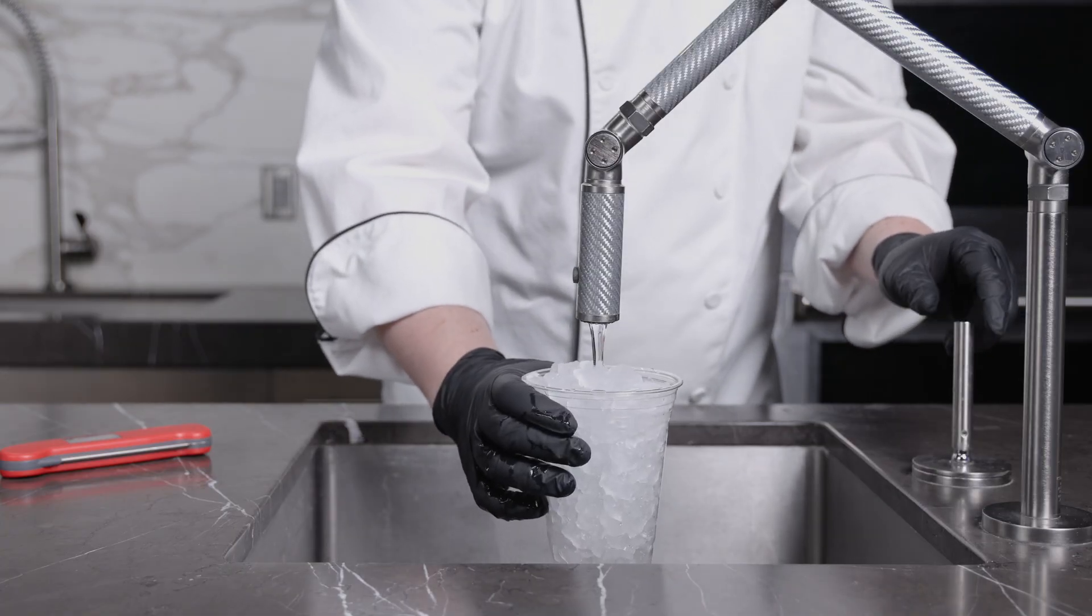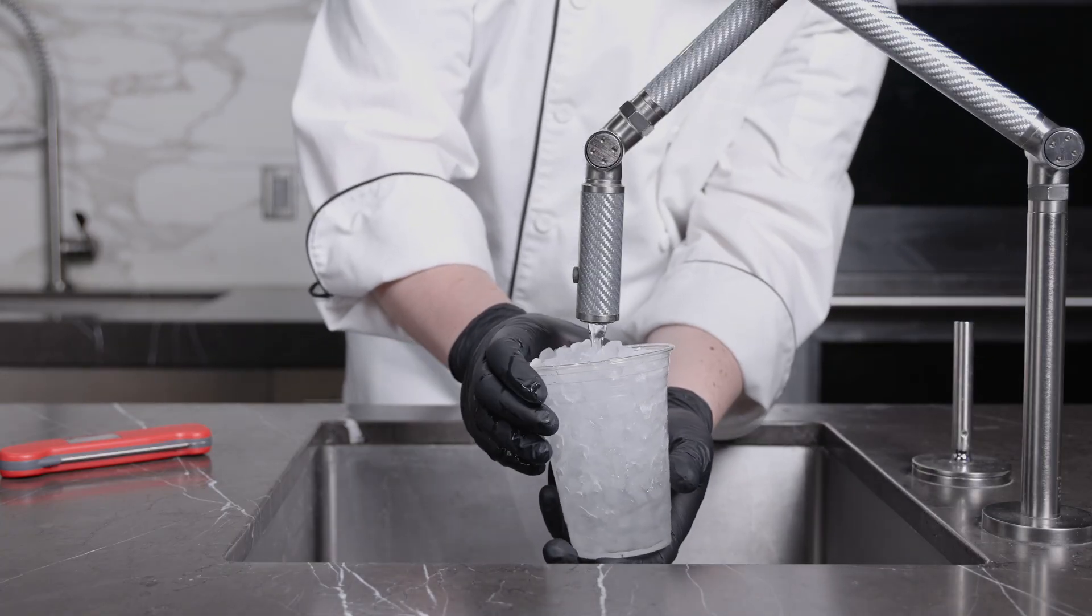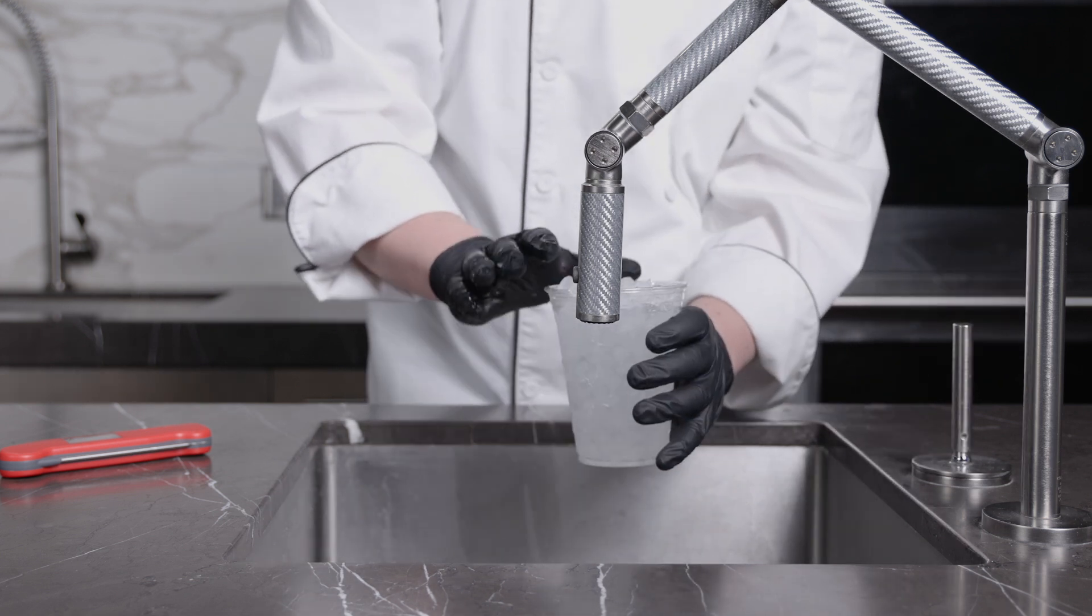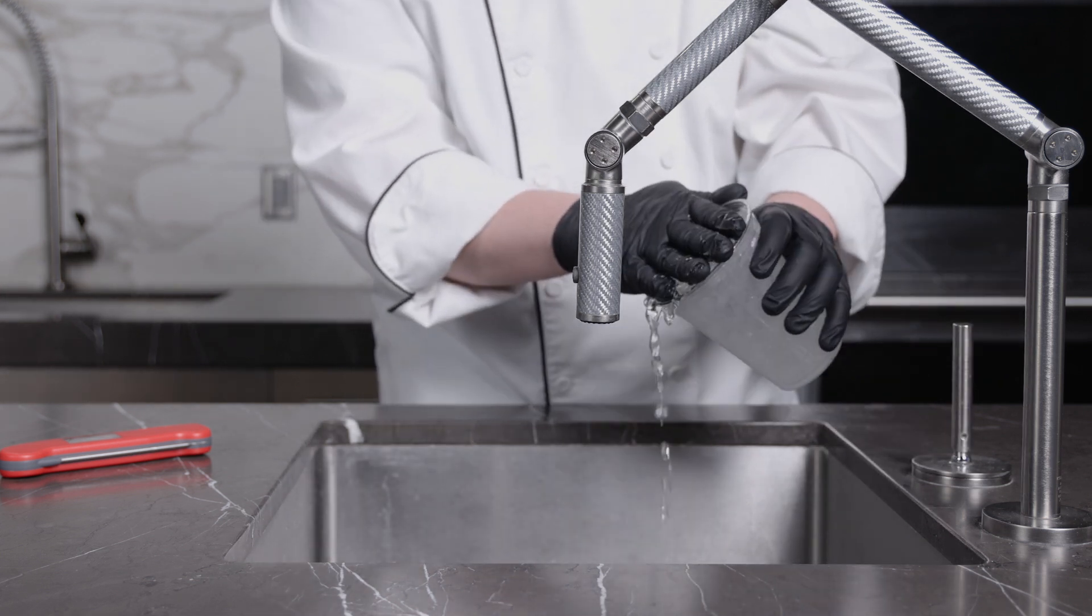Step 2: Add just enough water to fill in the cracks between the chunks of ice. You actually want the top of the water to be about half an inch below the top of the ice in the glass. Pour off a little water if you need to.